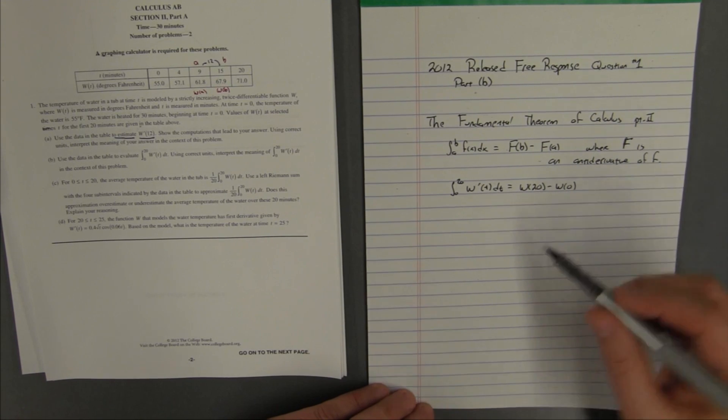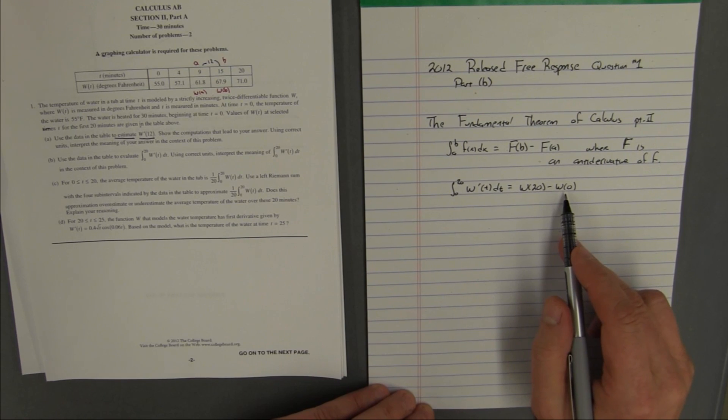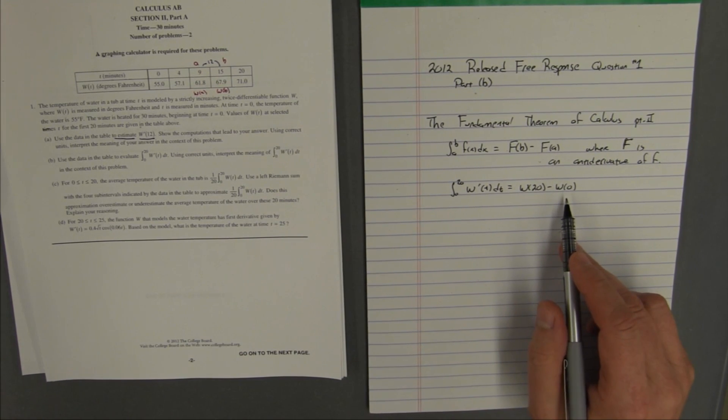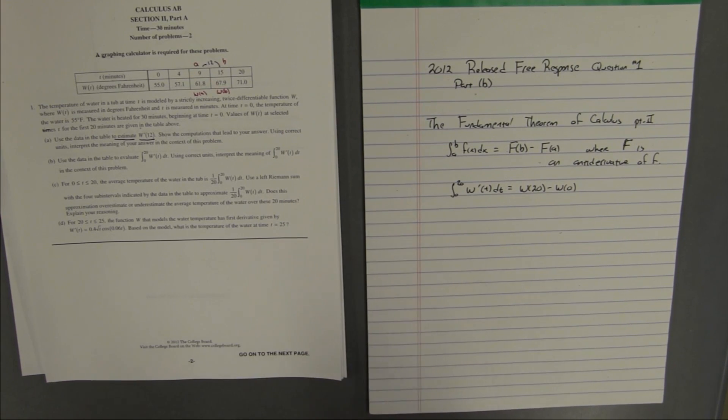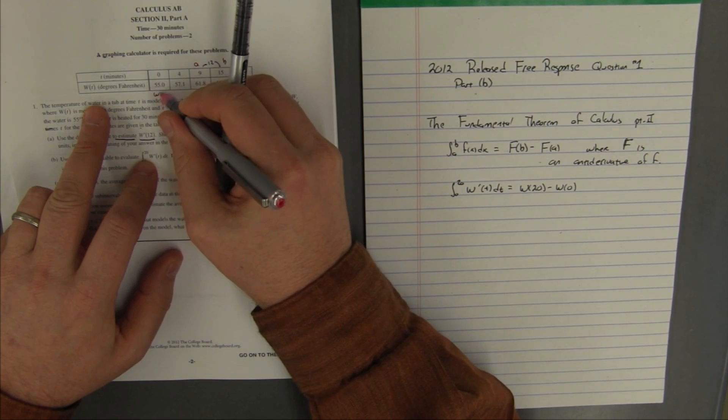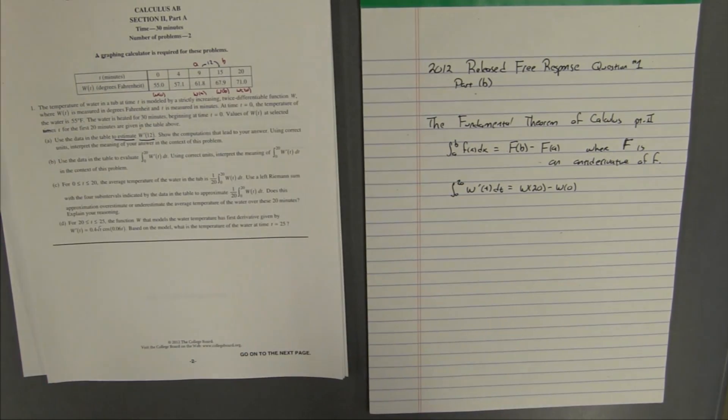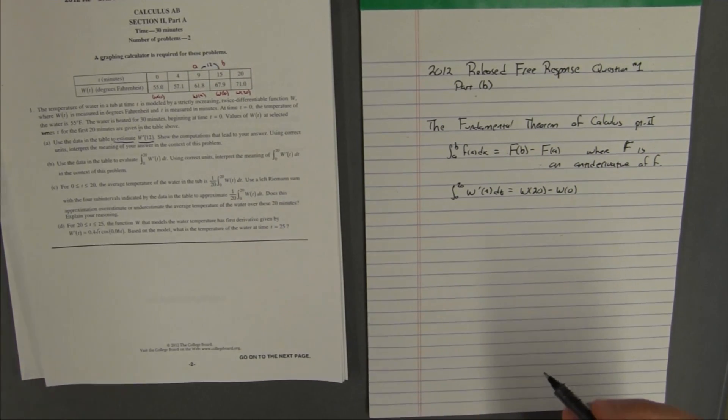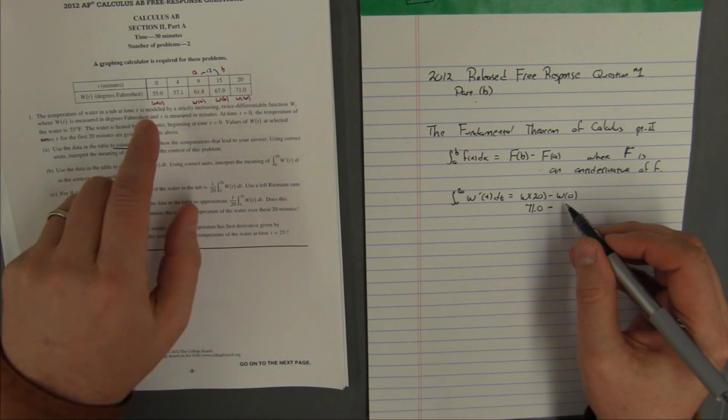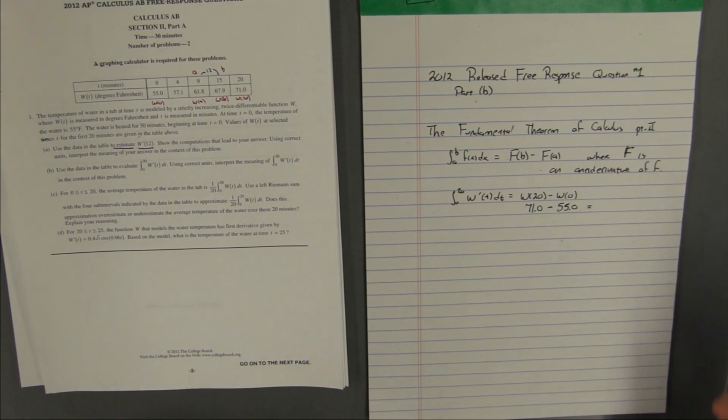So, now that once we get this interpretation, once we understand what this integral means, then it's easy to get the answer. Because all I have to do is come up here and say, well, where on my chart is w of 0 and w of 20? Well, here's 0 and here's w of 0, here's 20, here's w of 20. So, now I can just plug these values, w of 20, that's 71.0, w of 0, that's 55.0.